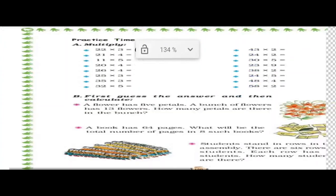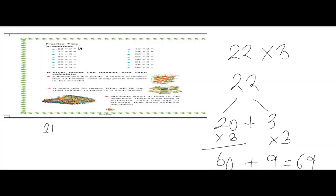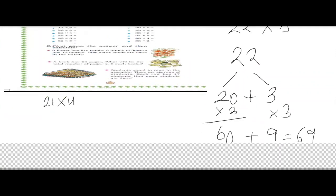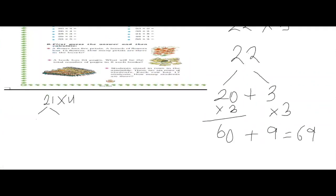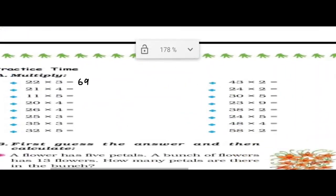Next, let us do 21 into 4. We know that we can divide 21 into 20 plus 1 and we will multiply each part by 4. So 20 into 4 is 80, plus 1 into 4 is 4. So our answer is 84. We will write 84 here.